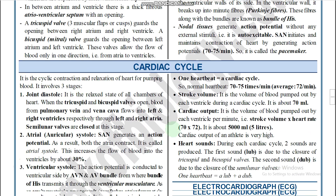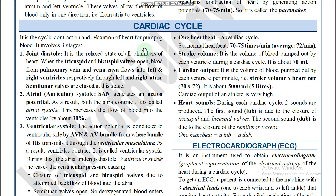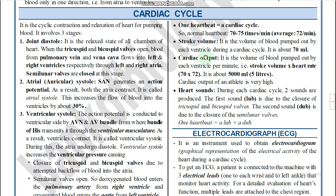Next is the cardiac cycle. We have already discussed the cardiac cycle in a previous video. The most important values to remember are: stroke volume is 70 ml and cardiac output is 5000 ml. For example, if stroke volume is 50 ml, then cardiac output would be 50 multiplied by 72.